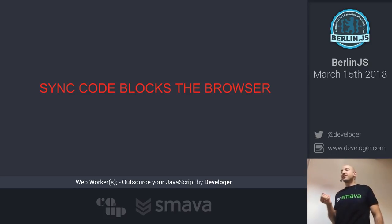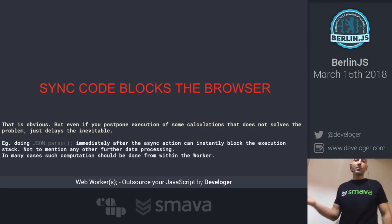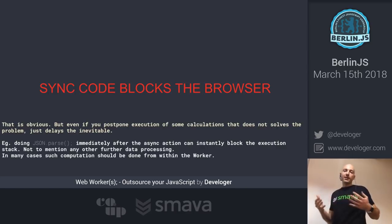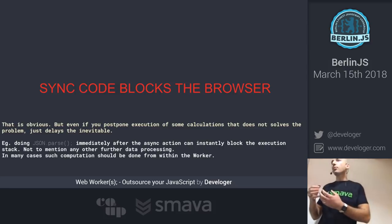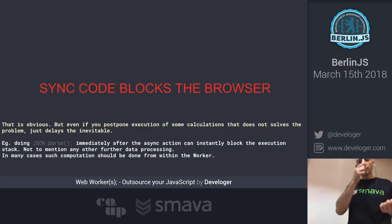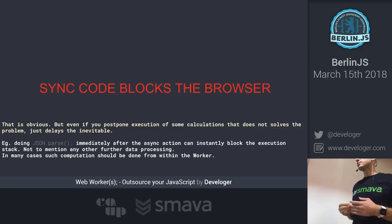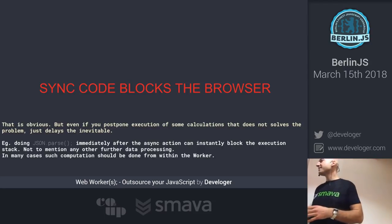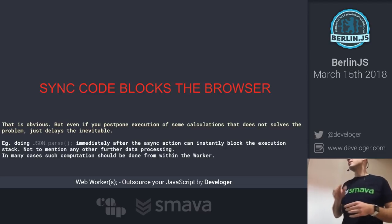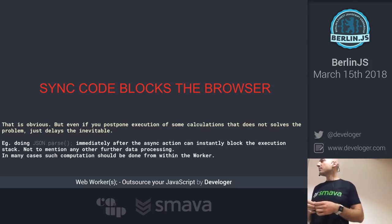Synchronous code blocks the browser — sometimes it can literally block your UI, not just the execution of JavaScript. Even if you defer execution, that won't solve your problem; it will just delay the inevitable. For example, with a typical API call you get your JSON and then you need to parse it. That parse is synchronous — it always has been and still is. If you have a huge data set, you can imagine the problem.